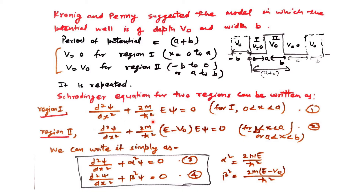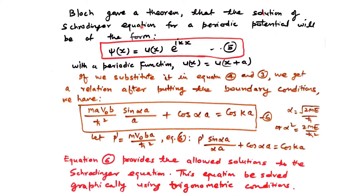We write the Schrödinger equation in these two regions: d²ψ/dx² + (2m/ħ²)(E − V)ψ = 0. For the first region where V equals zero, and for the second region where V equals V₀, we get E minus V₀. We define α² = 2mE/ħ² and β² = 2m(E − V₀)/ħ², giving simplified equations: d²ψ/dx² + α²ψ = 0 and d²ψ/dx² + β²ψ = 0. Bloch solved this problem and gave a theorem that the solution for a periodic potential is ψ = u·e^(ikx), where u is a periodic function u(x) = u(x+a) = u(x+2a).